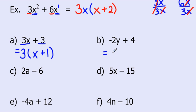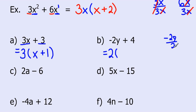Negative 2y plus 4: I'm going to take the greatest common factor out first. The highest possible number or variable that can go into both terms — I can see very clearly that 2 goes into both. I can't take out a y because there is no y in the second term. What's left over? Negative 2y divided by 2: if I cancel out those 2s, I'm still left with that negative, so I have negative y. Then 4 divided by 2 gives us 2 left over.